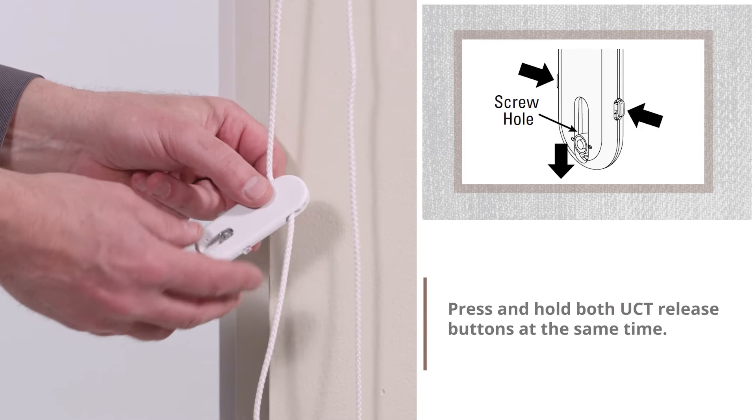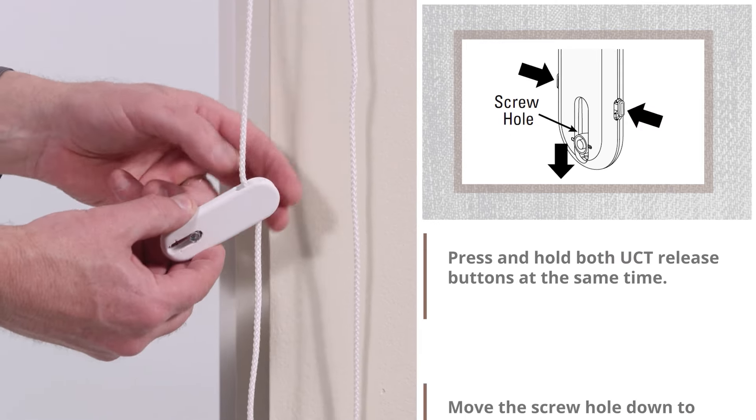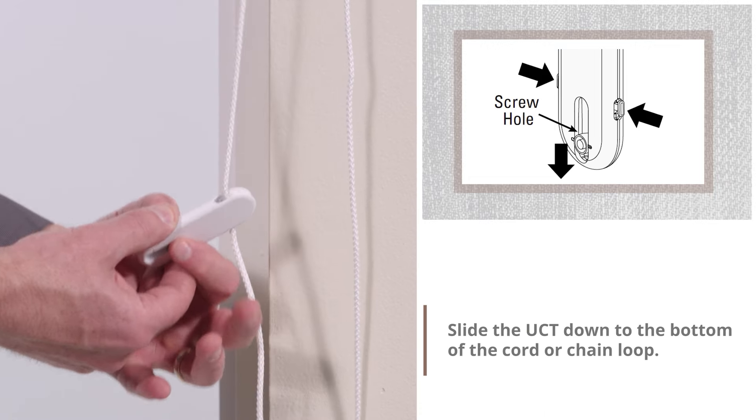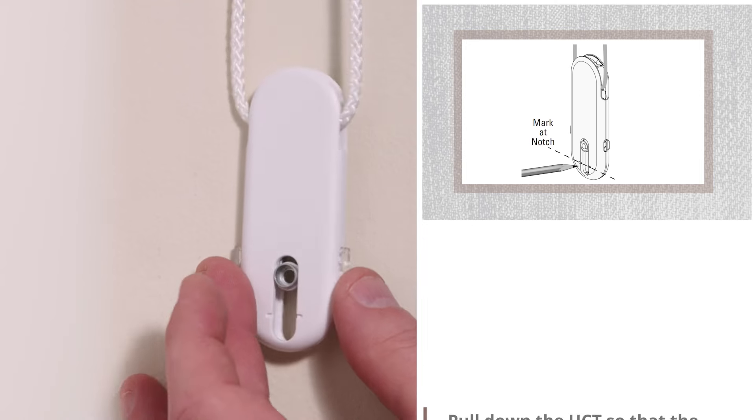Press and hold both UCT release buttons at the same time. Move the screw hole down to release the safety mechanism. Slide the UCT down to the bottom of the cord or chain loop.